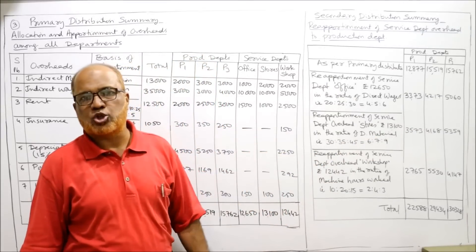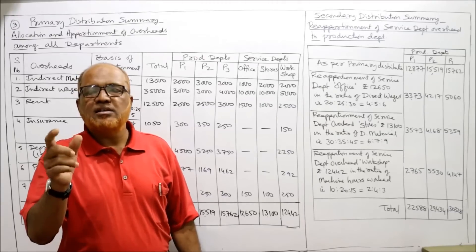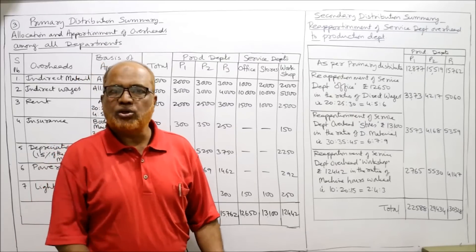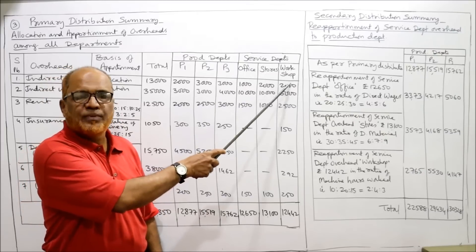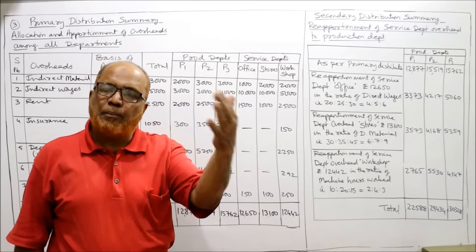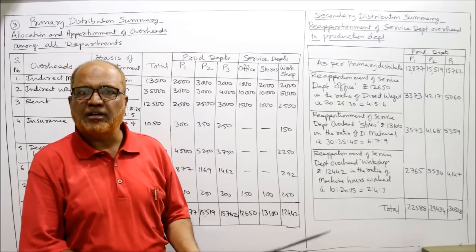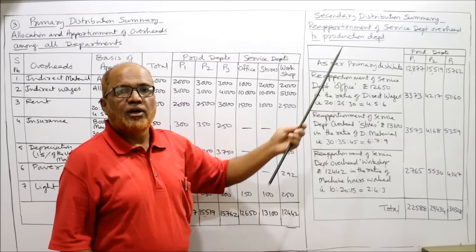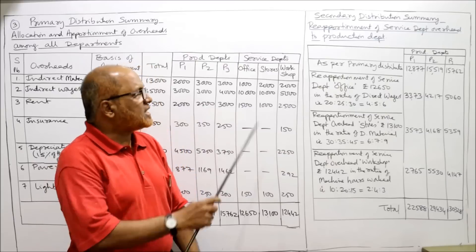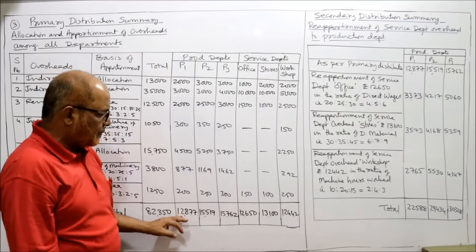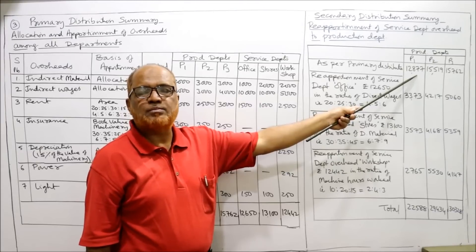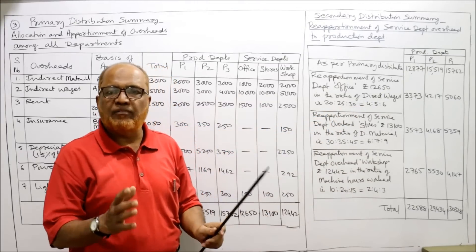Now we make the secondary distribution summary — this is the reapportionment of service department overheads to production departments. The service departments — Office, Stores, and Workshop — will be closed, and their totals reapportioned to P1, P2, and P3. As per primary distribution: P1 = 12,877, P2 = 15,519, P3 = 15,762.